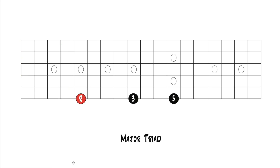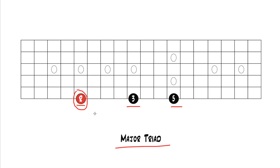The type of triad we're talking about right now is called a close position triad. A close position triad always goes in the order it's built. So for a major triad it would always be root first, then a major third, then a perfect fifth. For a minor triad, it would always be root first, then a minor third, then a perfect fifth. That's a close position triad in root position, meaning the root is your lowest note, the second lowest note is always a third, and the highest note is always a fifth.